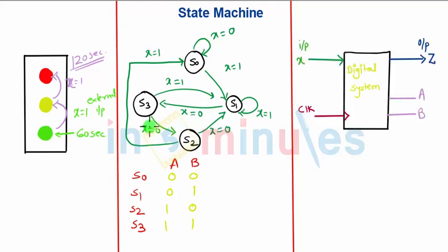This state machine can be represented in a digital system where X is the external input and Z is the output.